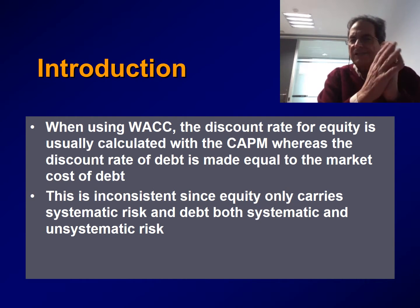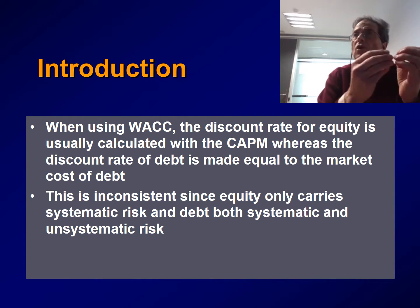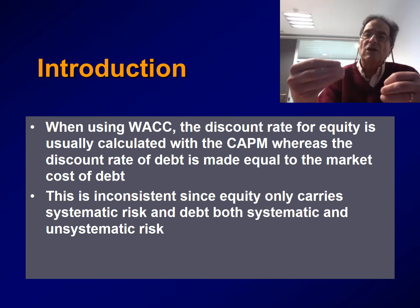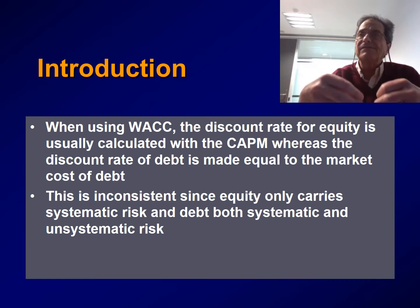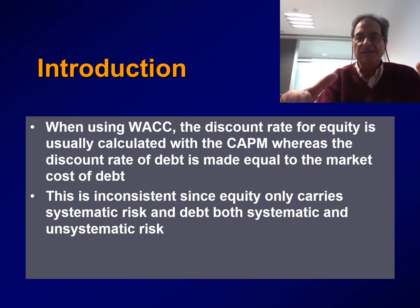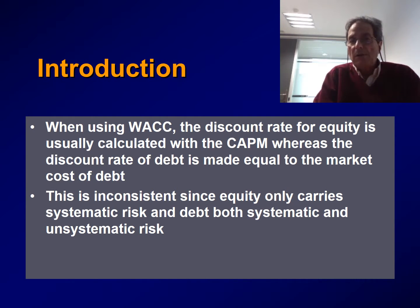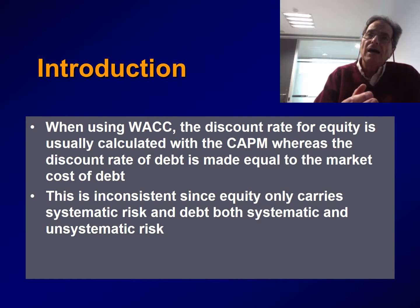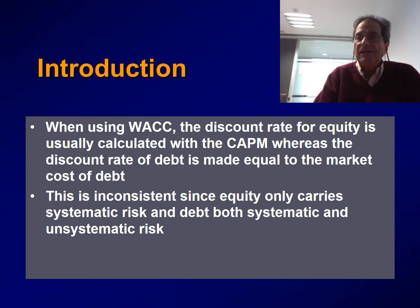This is inconsistent since equity only carries systematic risk. When you calculate RE, the discount rate on equity, using the Capital Asset Pricing Model, you are only including systematic risk in this discount rate. However, when you use the market cost of debt as RD, then RD includes both systematic and non-systematic risk.